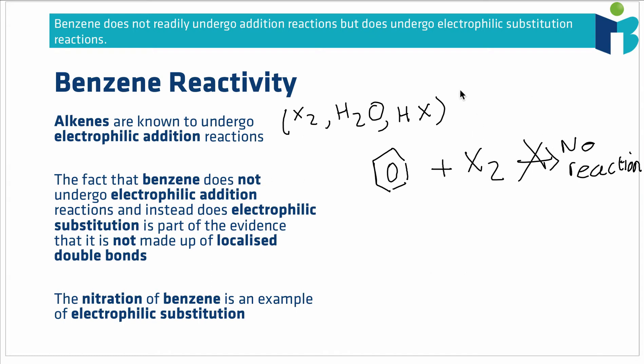We saw in the earlier part of this topic that this acts as evidence that benzene is not just made up of three double bonds, not made up of three alkene groups, because then we would predict it would have the same reactivity as an alkene. Instead, something else is going on, i.e. we have a delocalized pi structure.